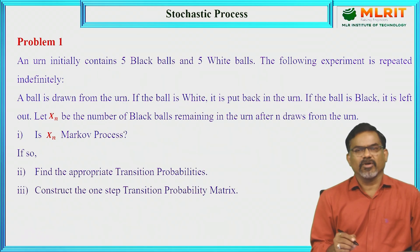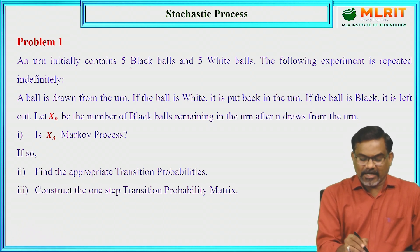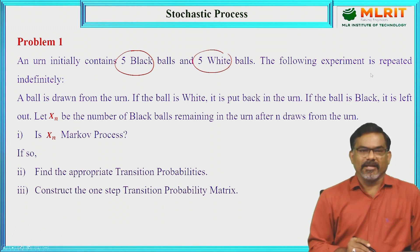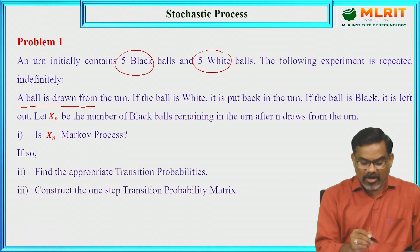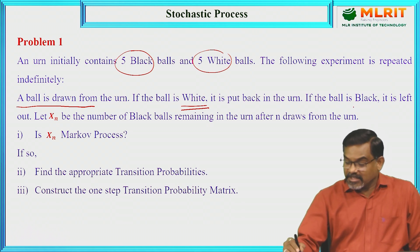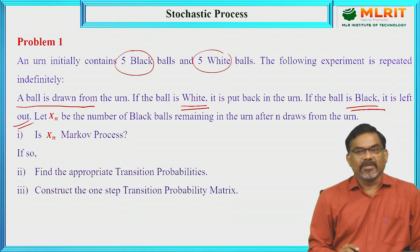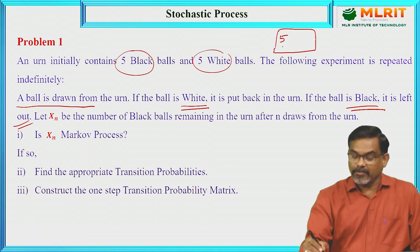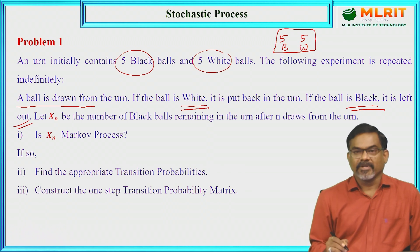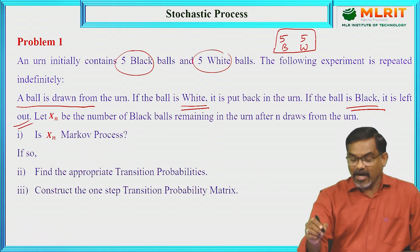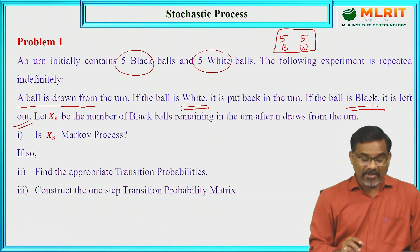Now let us solve some problems on Markov chain. Problem one: an urn initially contains five black balls and five white balls, and the following experiment is repeated indefinitely. A ball is drawn — if the ball is white, it is put back in the urn; if the ball is black, it is left out. So we have a box with five black and five white balls, and we draw one ball at random each time.